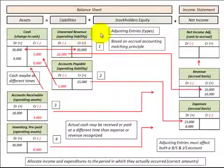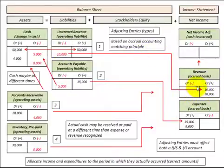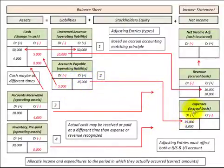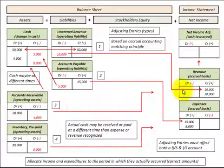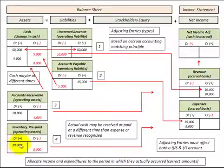For unearned revenue, this is where you'd receive a cash payment prior to earning any of the revenue, and when you do earn this revenue, you'd recognize it on the income statement. For accounts payable, this is where you'd incur an expense or purchase something on credit prior to making any cash payments, and when you incur this expense you'd recognize it as an expense on the income statement. For accounts receivable, this is where you'd make a sale or earn revenue prior to receiving any cash payments, and at the time you make the sale you'd recognize it on the income statement. For inventory and prepaid expenses, this is where you'd make a cash payment prior to use of the inventory, and when you actually use the inventory or prepaid expense you'd recognize it as an expense on the income statement.